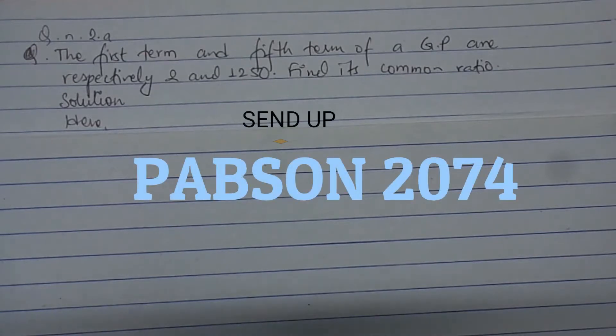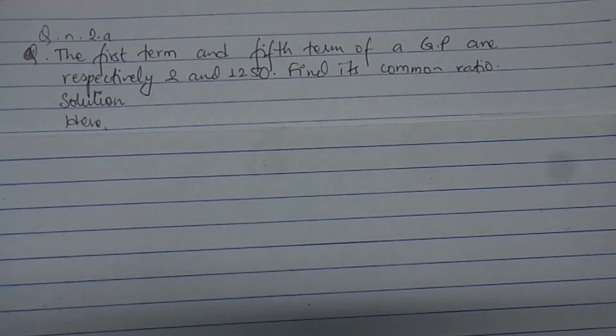The question is: the first term and fifth term of a geometric progression are respectively 2 and 1250. Find its common ratio. This question is related to sequence and series. The given progression is geometric.